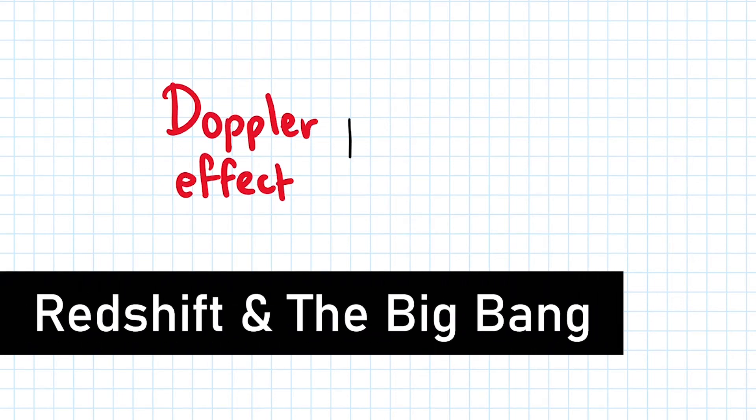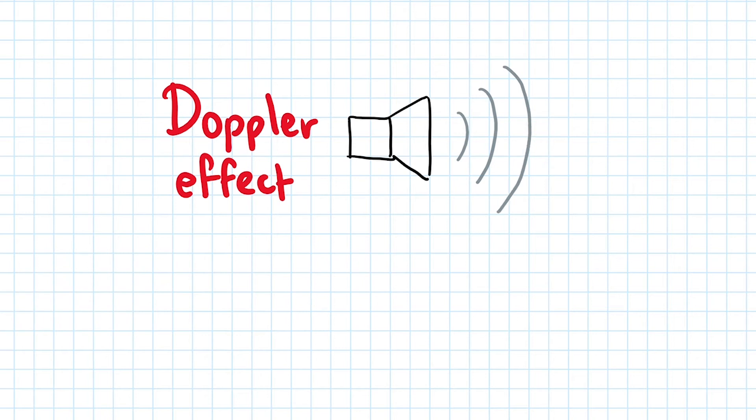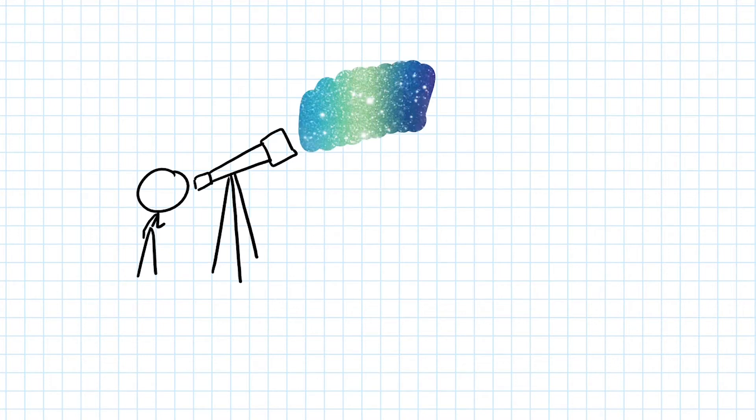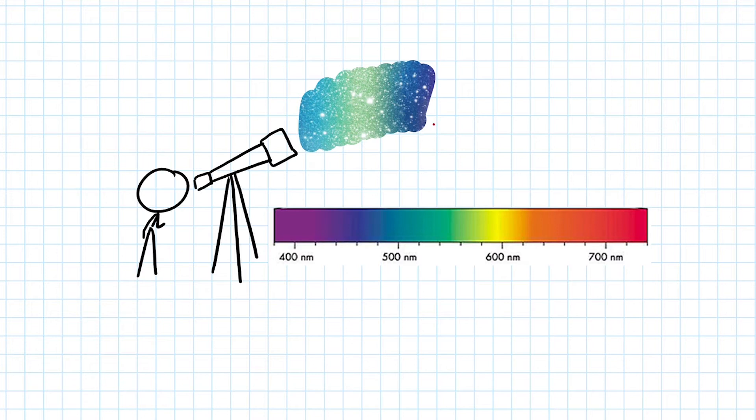You may already know that the Doppler effect causes a shift in wavelength of sound and light by either squishing the wave or stretching it. In astronomy, the shift in frequency and wavelength towards the red end of the electromagnetic spectrum is known as redshift.